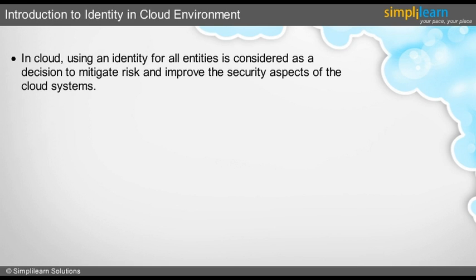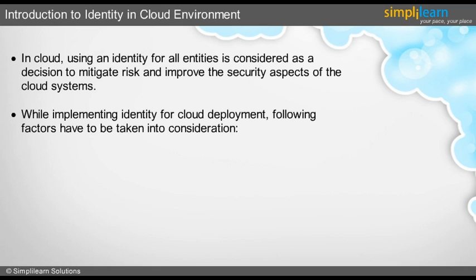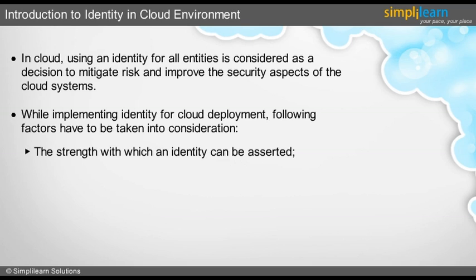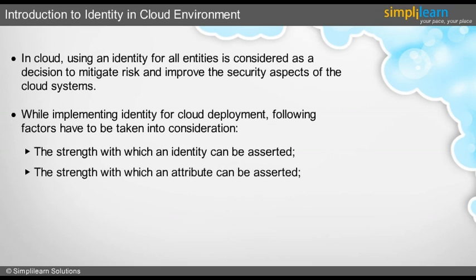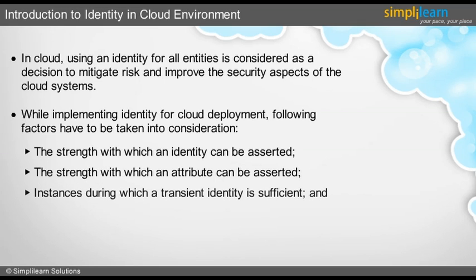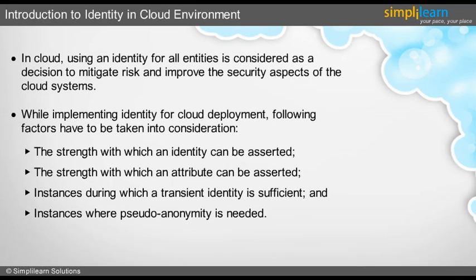In this slide, we will get introduced to identity in the cloud environment. With industry scaling from small scale to global levels with different types of cloud deployment models, identity management has become a major issue. In cloud, using an identity for all entities is considered a decision to mitigate risk and improve security. Factors to consider include the strength with which an identity can be asserted, the strength with which an attribute can be asserted, the instances during which a transient identity is sufficient, and the instances where pseudo-anonymity is needed.